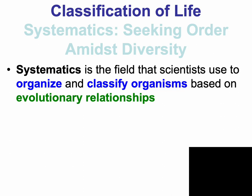Systematics is a scientific field that biologists use to organize and classify organisms. An underlying theme of biology is evolution, and the way in which organisms are organized and classified is based on their evolutionary relationships. This allows us to look at the diversity of life in an orderly manner.